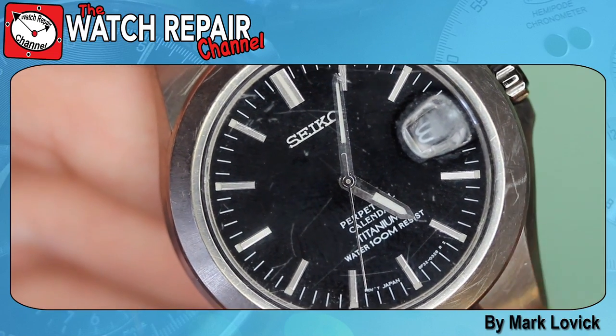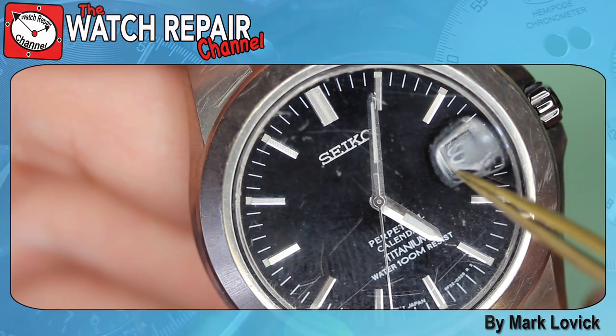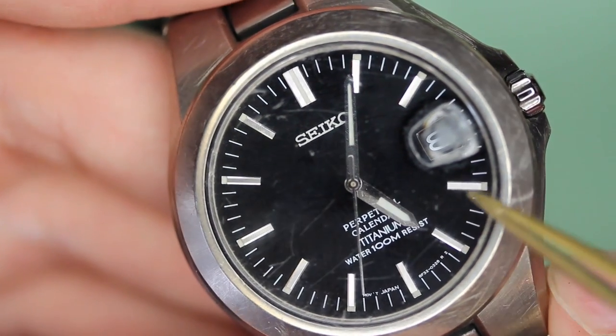As you can see, the glass on this Seiko Perpetual Calendar watch is very scratched, and so today I'm going to show you how to replace one of these.